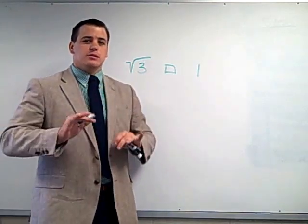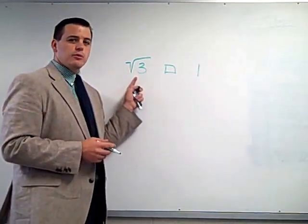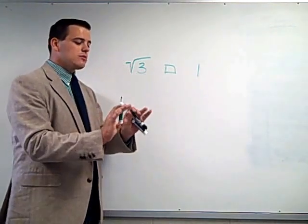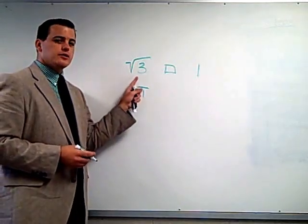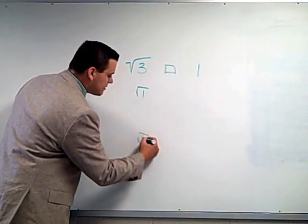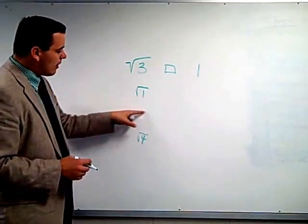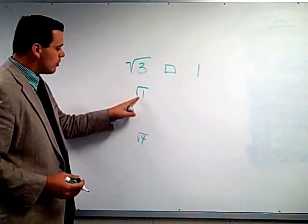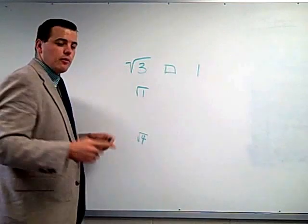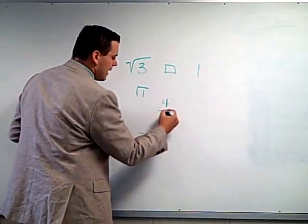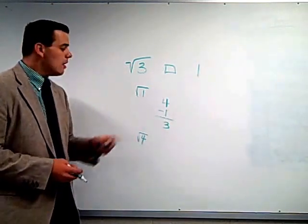We have a step process — you can see this in your notes as well. The very first step is to find the perfect square root that is less than the square root of 3, which is the square root of 1. Then we find the perfect square root that is greater than 3, which is 4. Now the second step: we do bigger minus smaller — 4 minus 1 is 3.